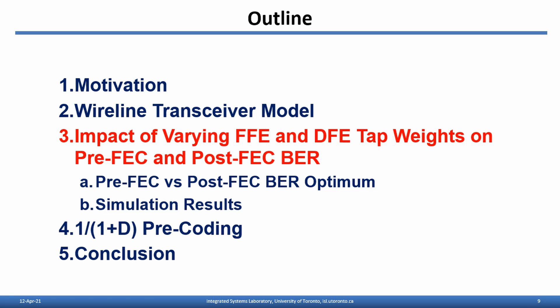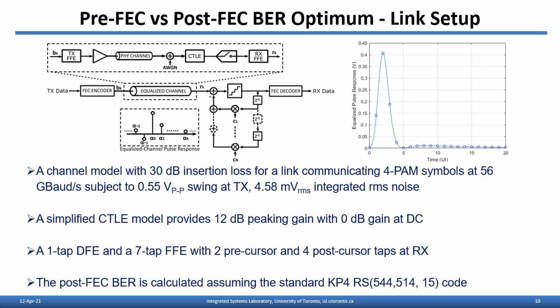Note that we have introduced our transceiver model that is able to consider both CTLE noise filtering, FFE noise amplification, and DFE error propagation. We then apply this model to generate simulation results studying the impact of varying FFE and DFE tap coefficients on pre-FEC and post-FEC bit error rate. We use a channel model with 30 dB insertion loss for a link communicating PAM-4 symbols at 56 Gbps, subject to 0.5 V peak-to-peak swing at the transmitter. We use a simplified CTLE model providing 12 dB peaking gain with 3 dB gain at DC. At the receiver, we have a one-tap DFE and a seven-tap FFE with two precursor and four post-cursor taps. The post-FEC bit error rate is calculated assuming the standard KP4 Reed-Solomon 544,514,15 code.